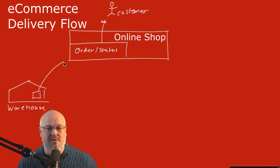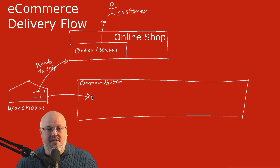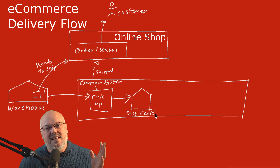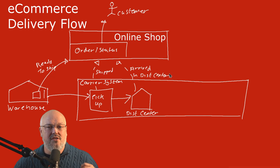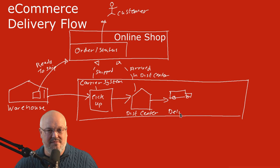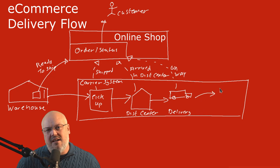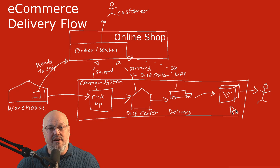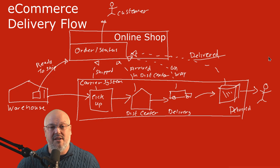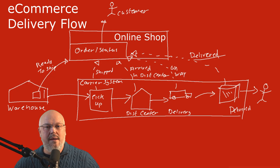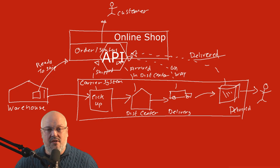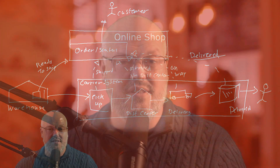I'm going to use the example of an e-commerce product delivery to a customer. We're going to look at the carrier system, and as the product moves through different stages of delivery, the carrier system can inform the e-commerce system using a webhook. Each event in the carrier system has a webhook configuration to talk to the e-commerce system and inform it of a change — whether a package has arrived at the distribution center, it's out for delivery, or the package is now being collected by the customer.